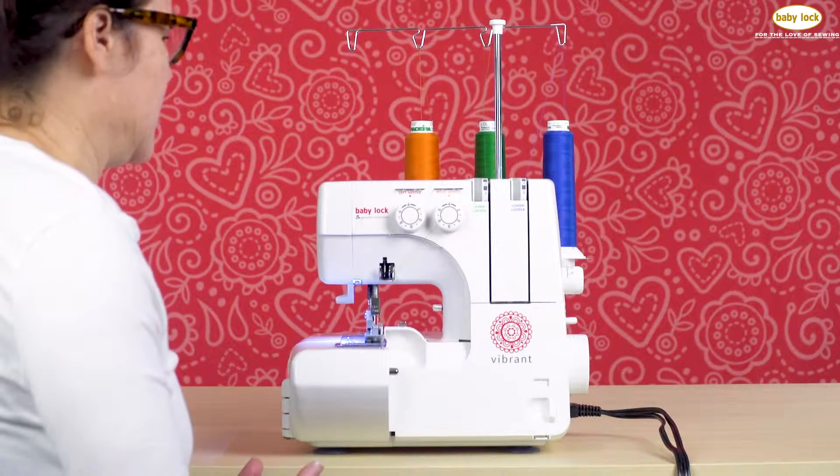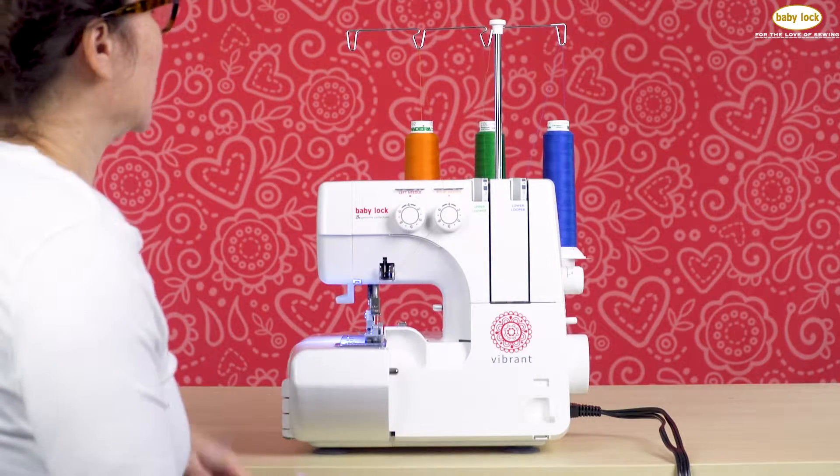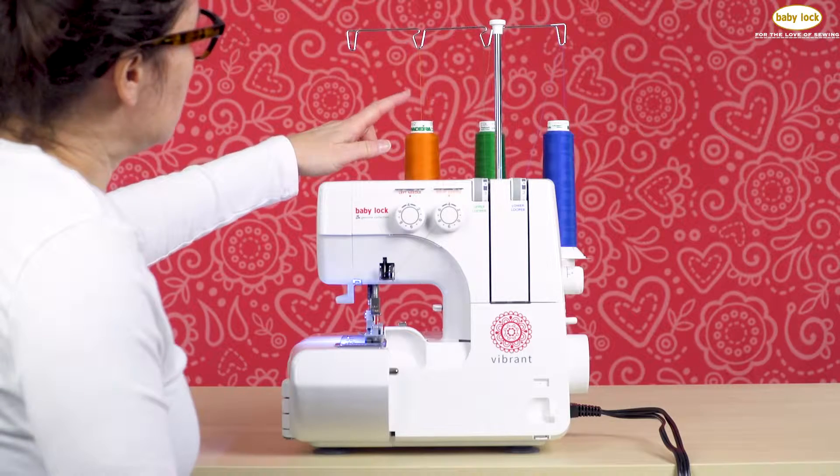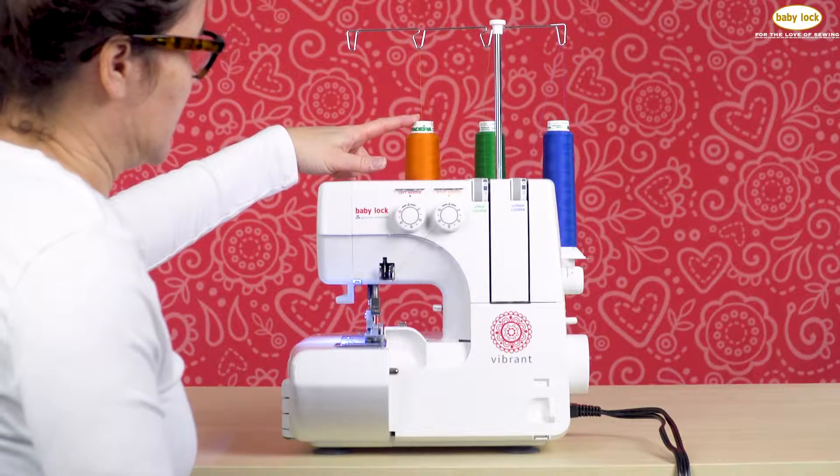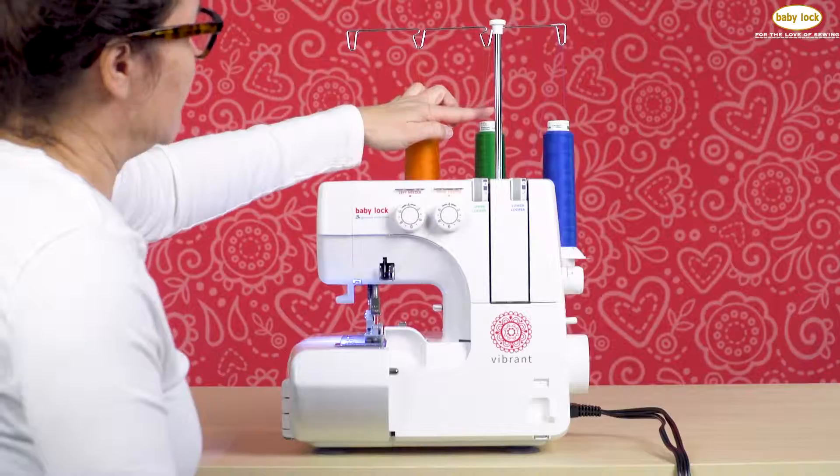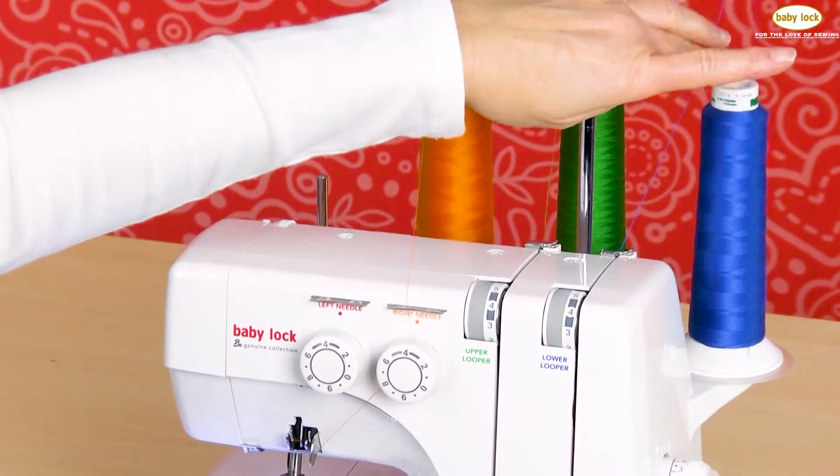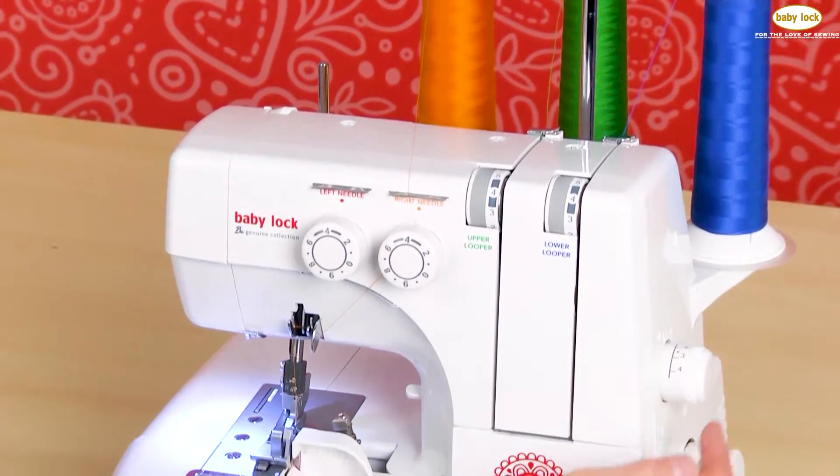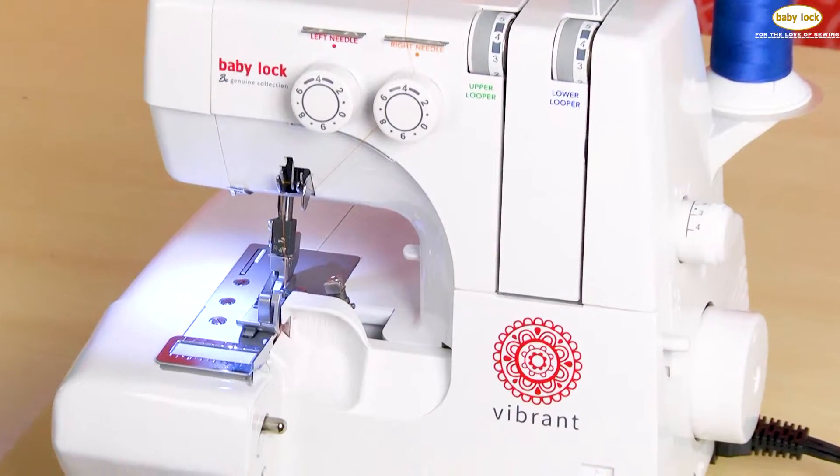When I set up my stitch, I use a three-thread overlock. You can see I have my needle thread in the right position because I want a narrow stitch. Then I have an upper looper and a lower looper. I lengthen my stitch length out to about three and a half.